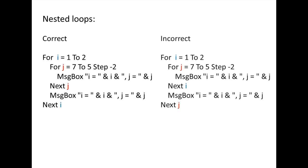On the right, the next i and next j statements are switched. This code would result in an error message since the j loop is not completely contained within the i loop.